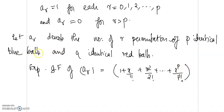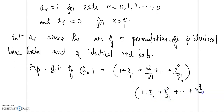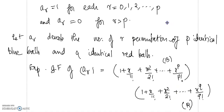We can choose any number of blue balls from 0 up to a maximum of P. For the red balls, the corresponding factor is 1 plus x/1! plus x²/2! plus etc. up to x^q divided by q factorial. So the first factor corresponds to the blue balls and the second factor corresponds to the red balls. That is how we obtain the number of permutations when objects are repeated.